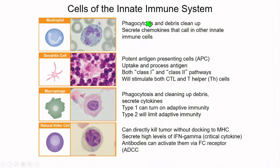The cells of the innate system include neutrophils, which result in phagocytosis and debris cleanup and secrete cytokines that call in other innate immune cells. Dendritic cells are very important antigen-presenting cells, especially relevant to Sipuleucel-T. You also have macrophages and natural killer cells.